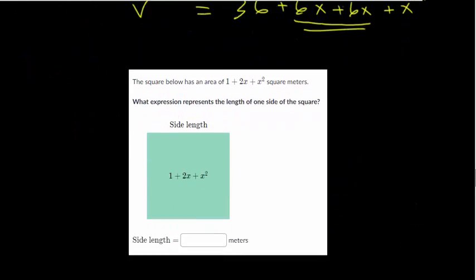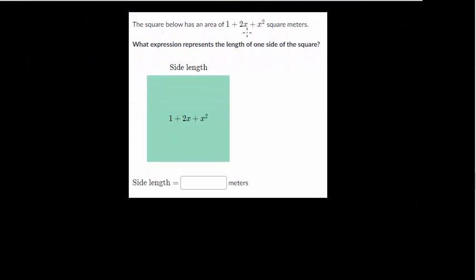So let's go on to another one. And this is a word problem. So we have to be a little bit more careful here. So we have the square below has an area of this quadratic expression, square meters. What expression represents the length of one side of the square?